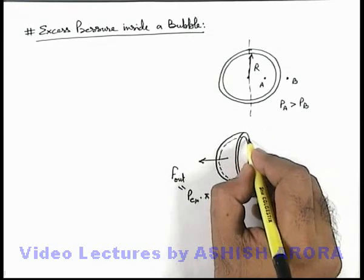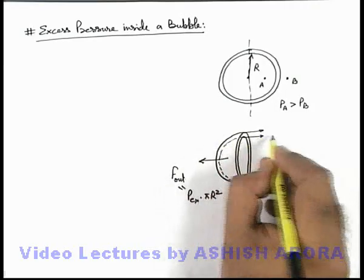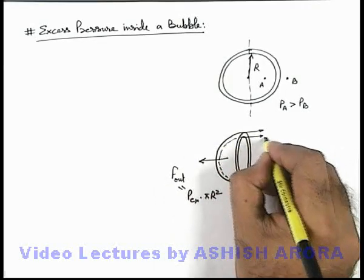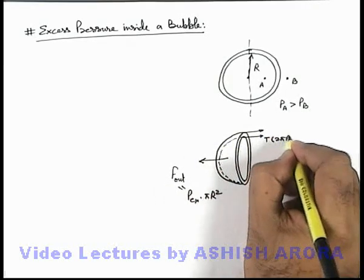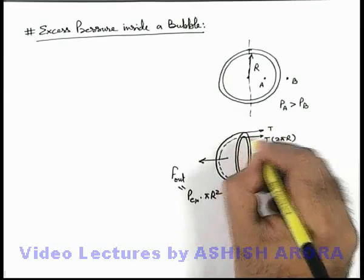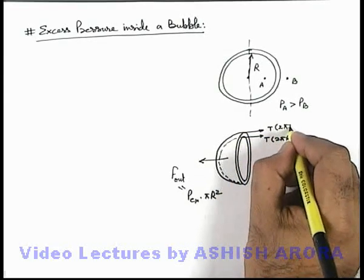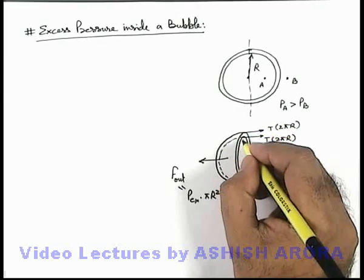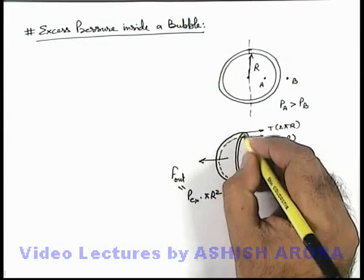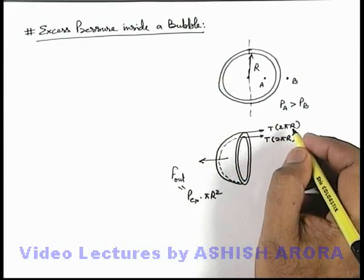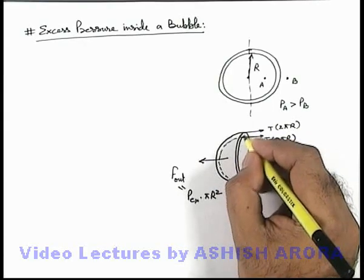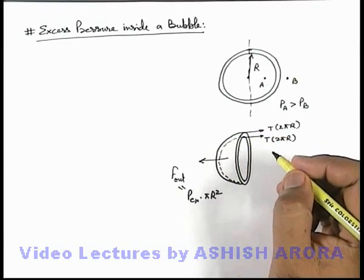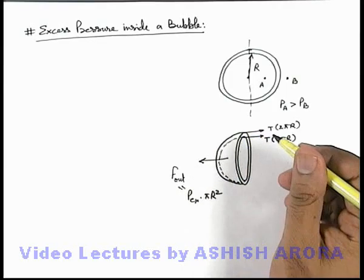And on the two circumferences in inward direction, surface tension will exert a force that is T into 2πr. And on both the surfaces it will be T into 2πr, and we can take the radius of the two surfaces to be r, as the film thickness or wall thickness of the soap bubble can be considered to be very small.